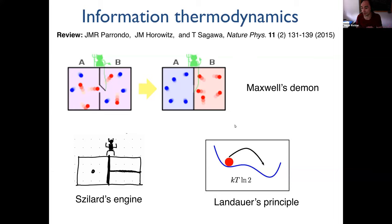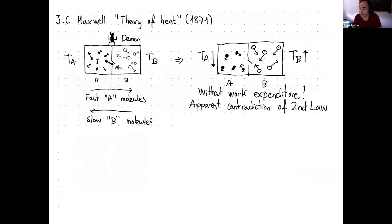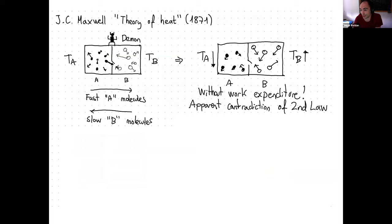Later on, once I explain this, I will go into a framework of information thermodynamics which will try to unify all these ideas and discuss also fluctuations of these systems. So Maxwell Demon is really a classic in thermodynamics. This was proposed by James Clerk Maxwell in 1871, published in the paper Theory of Heat. The idea of Maxwell Demon is to devise a thought experiment in which we can reverse the thermodynamic arrow of time.